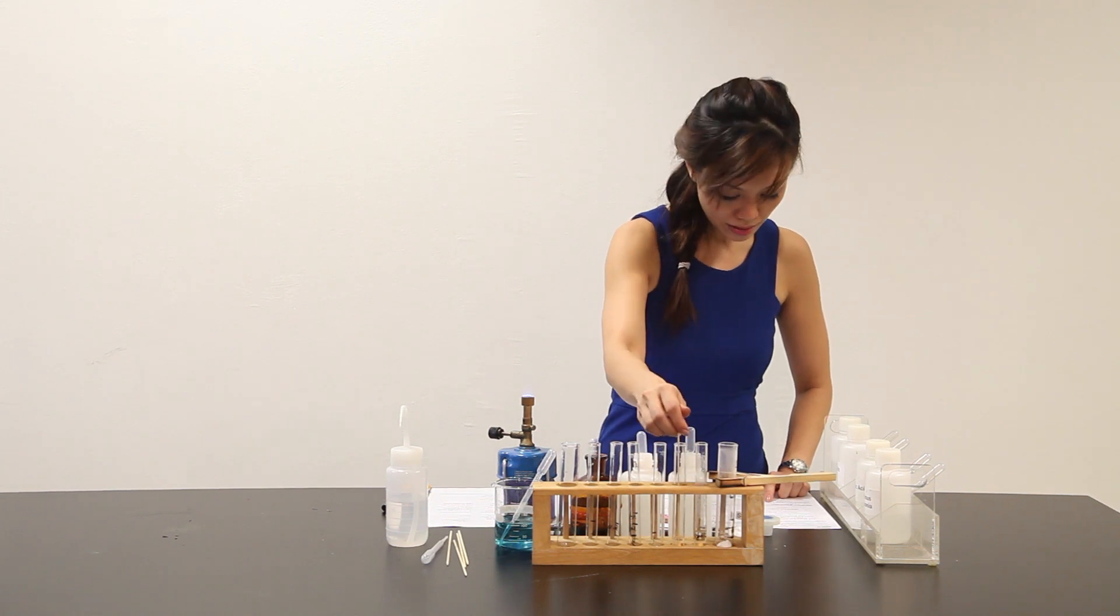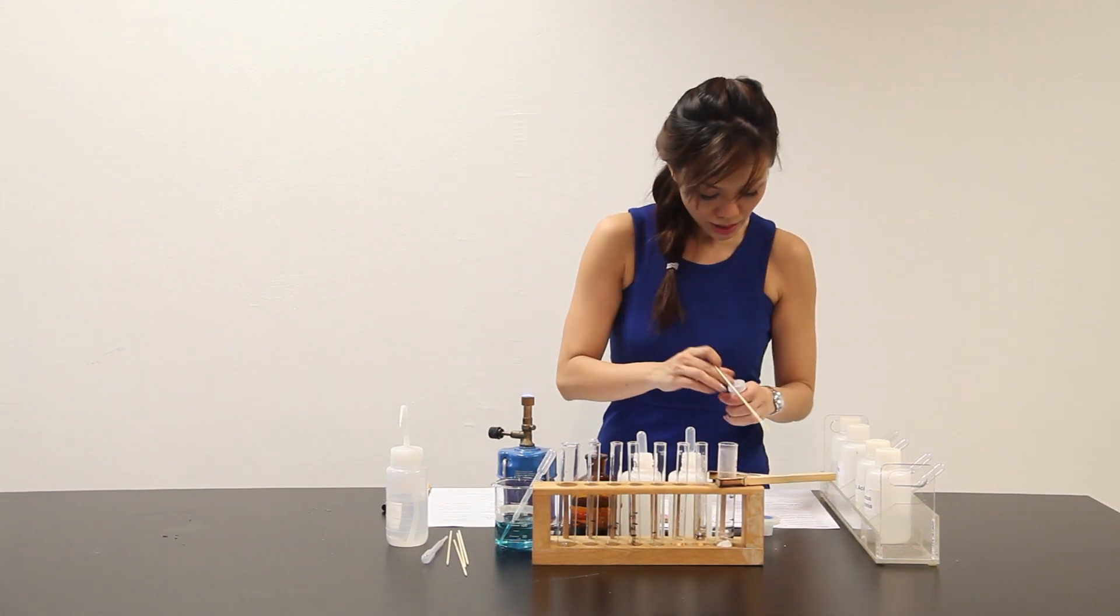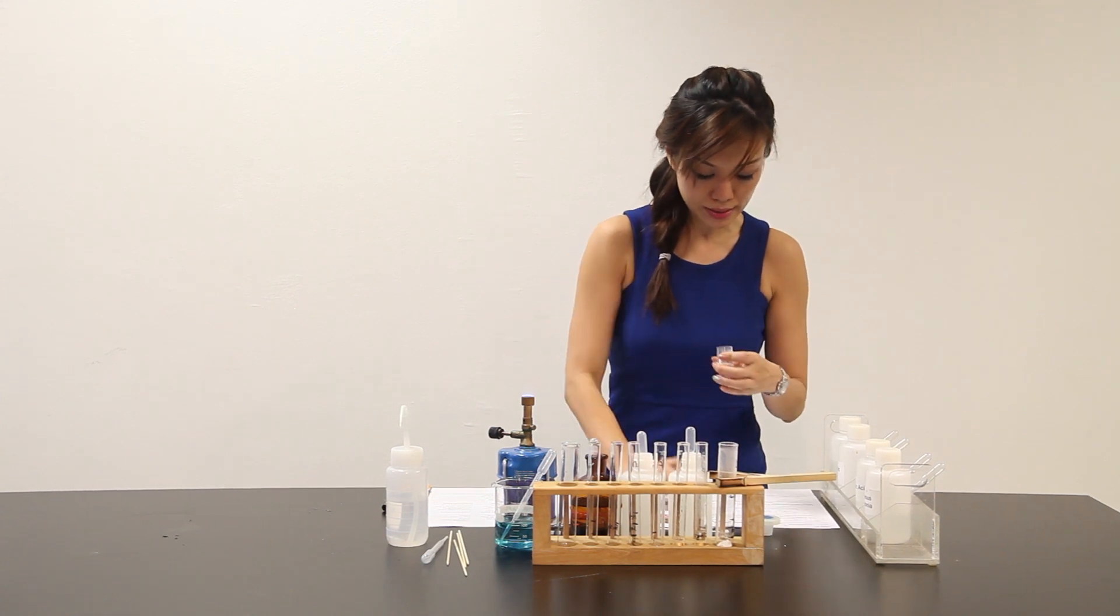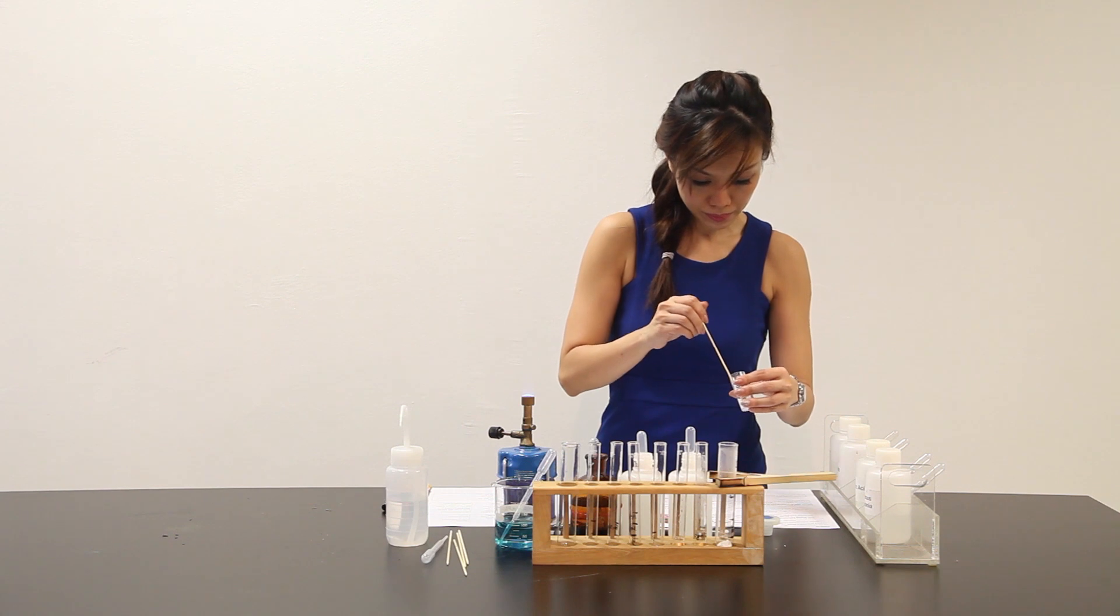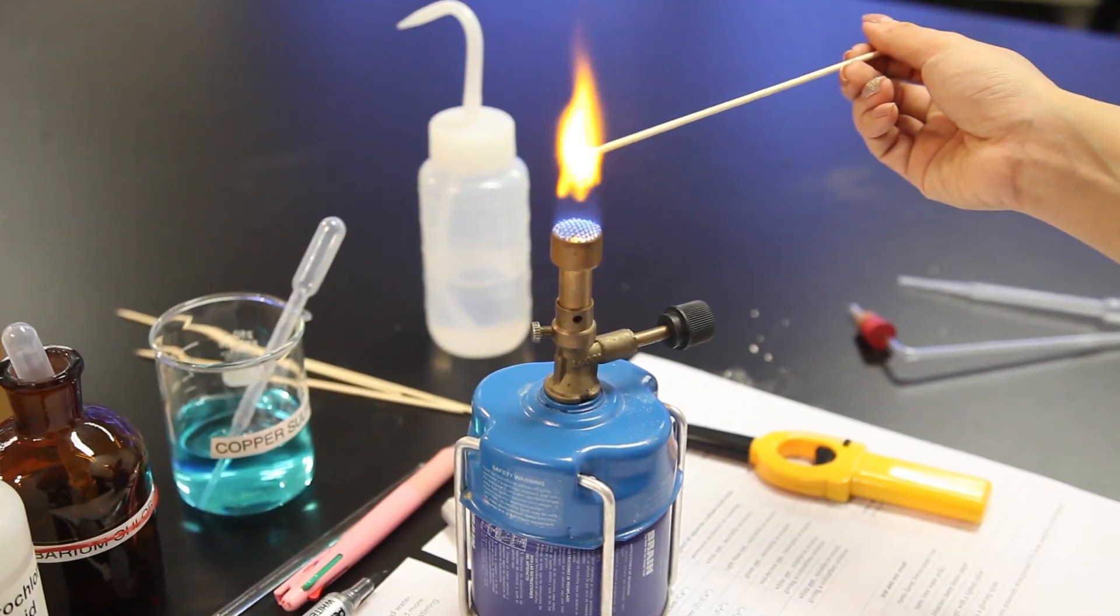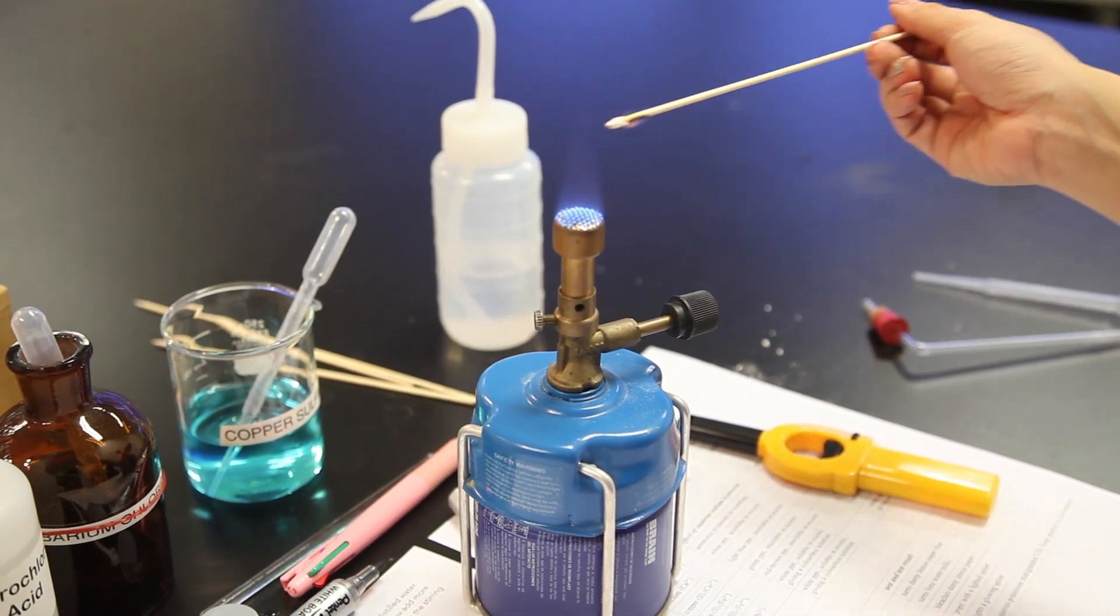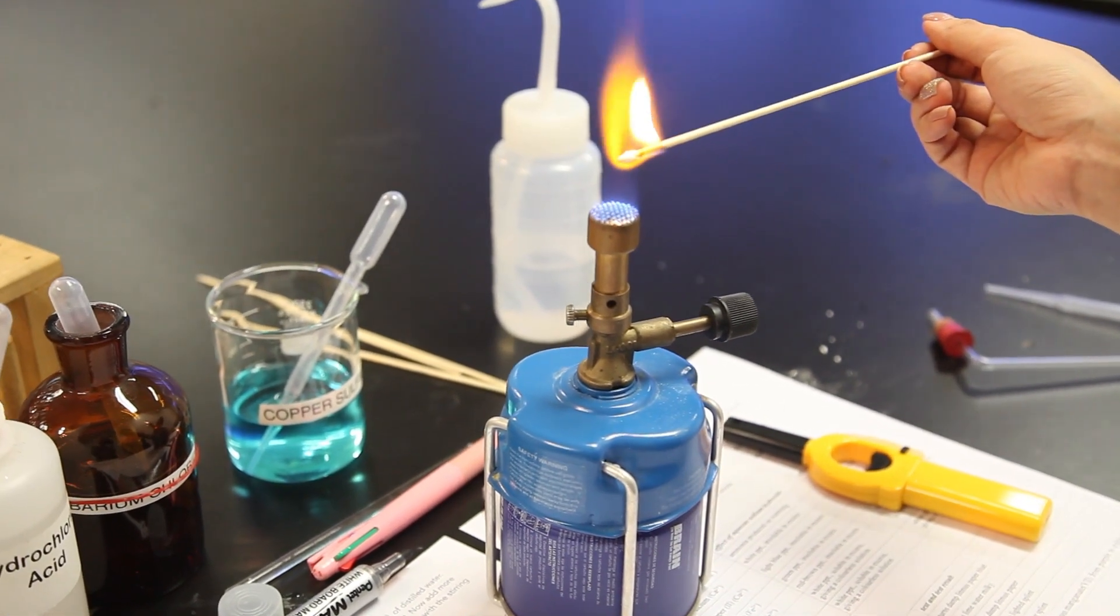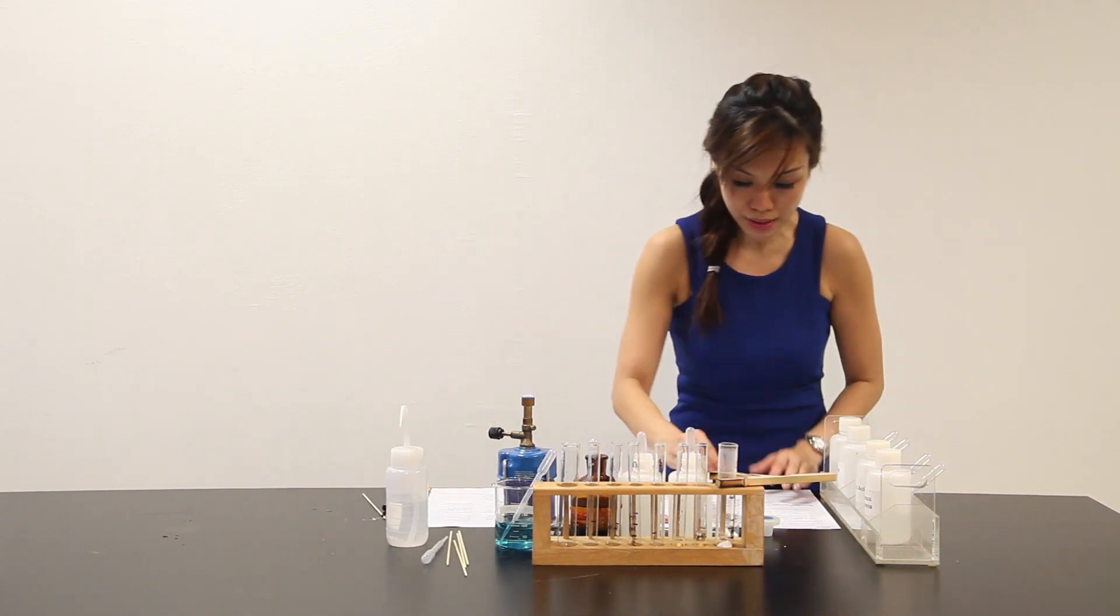Moisten the end of the wooden splint with water and dip this into sample solid X. And place this end in the Bunsen burner. And I can see over here that an orange flame is observed. So, let me write down the observation. An orangey flame is observed.